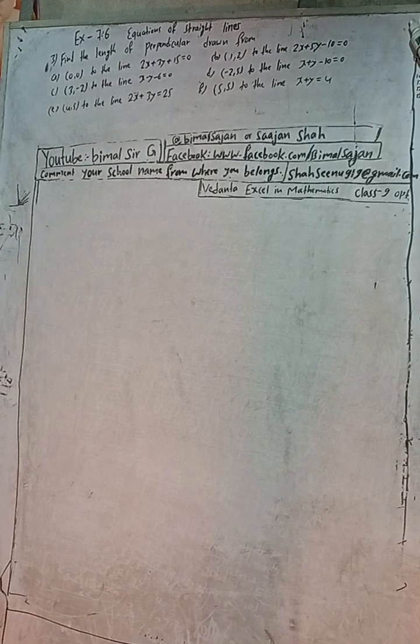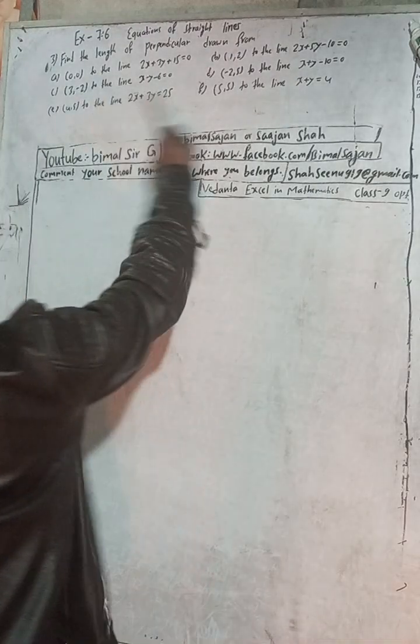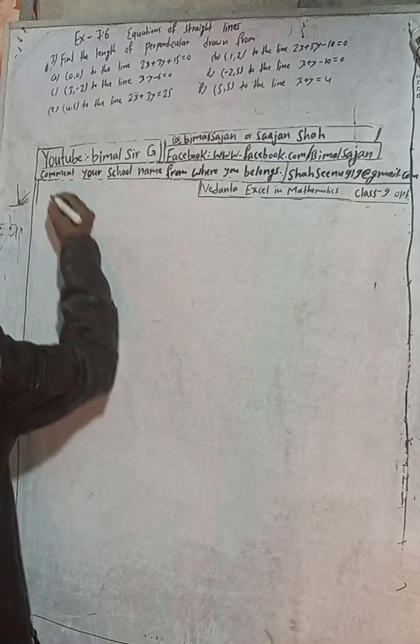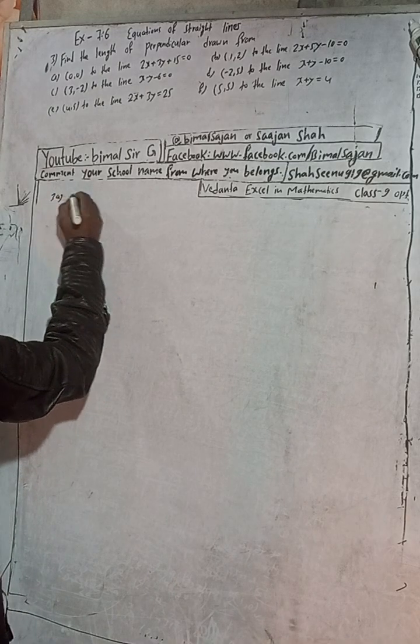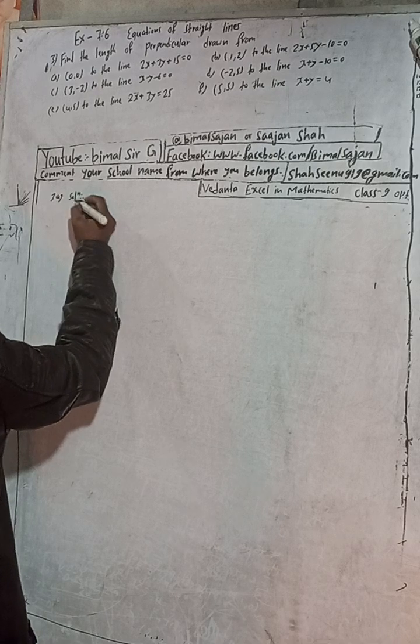Hi class 9 and 10 students, welcome back to Vimal Swarji YouTube channel. This is question number 3, exercise 7.6, equations of straight lines, class 9 optional mathematics. Check the playlist, you will get a lot of solutions of both 9 and 10 compulsory as well as optional mathematics. Now here, find the length of perpendicular drawn — there are six questions and I am going to solve all of them in a single video.